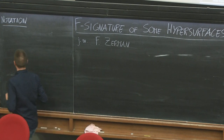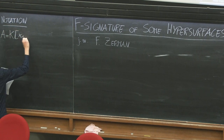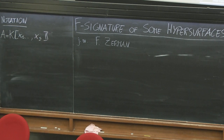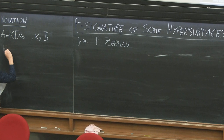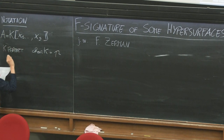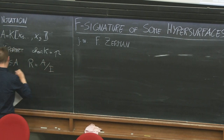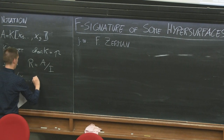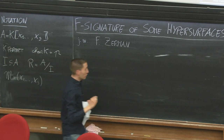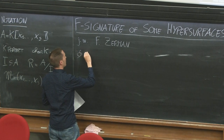Let me start by fixing some notation. We will work over A, which is the power series ring in S variables. We use the letter S to denote the number of variables — I want to keep N to be the argument of the functions. I will assume the field K is perfect and of positive characteristic P. Then we consider an ideal I inside A, and we will work over the quotient R = A mod I, and I will denote by M the maximal ideal in R.